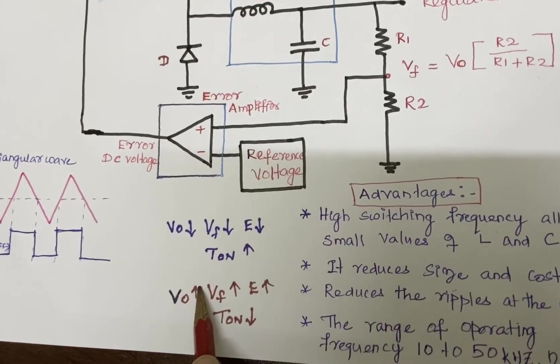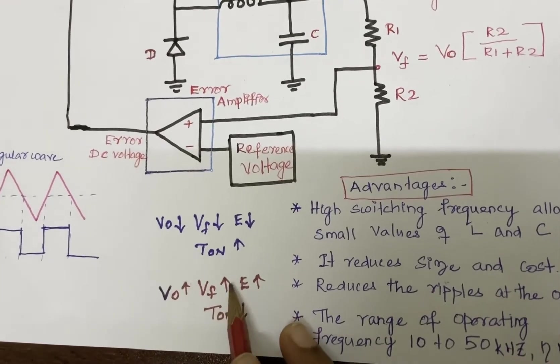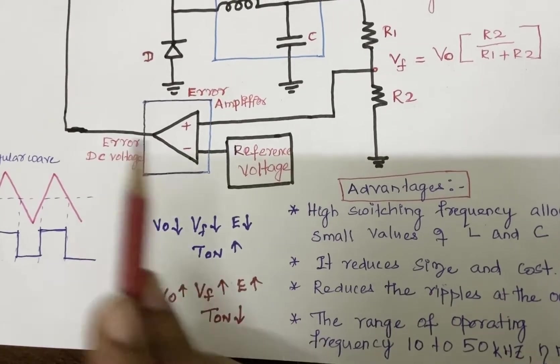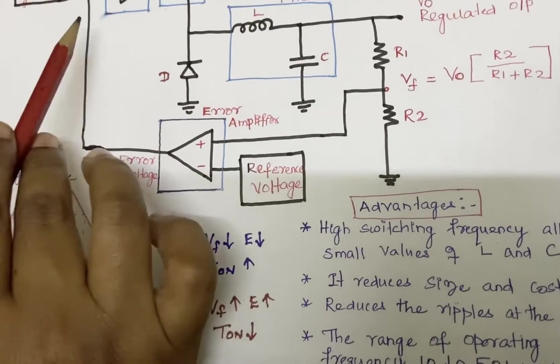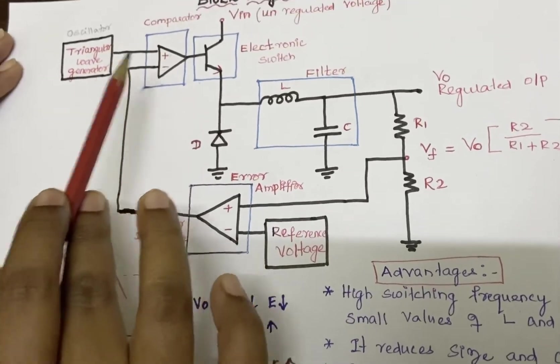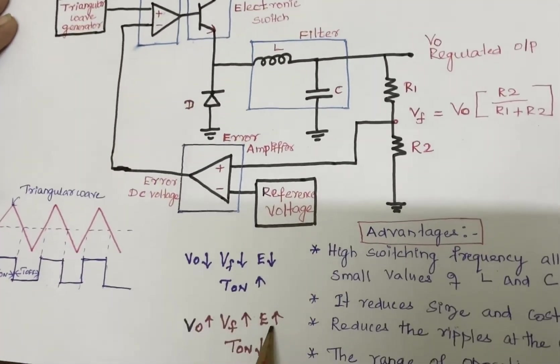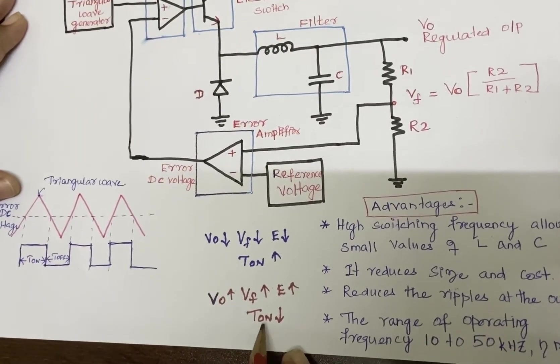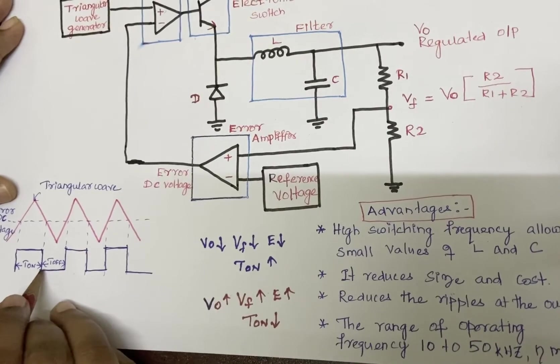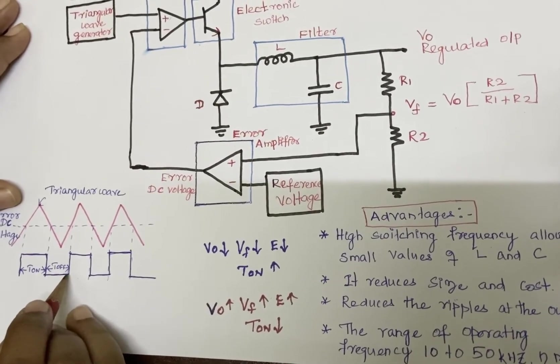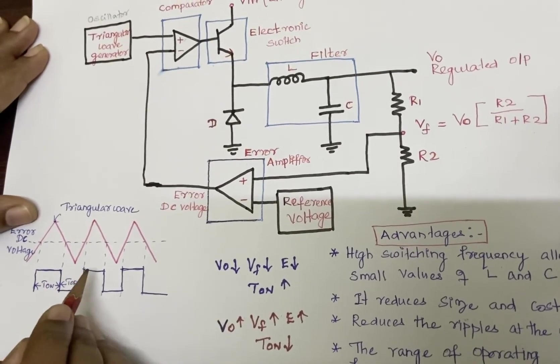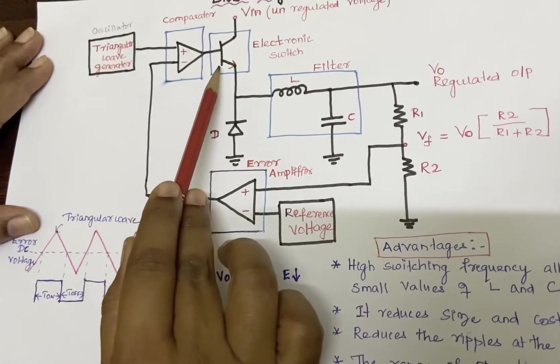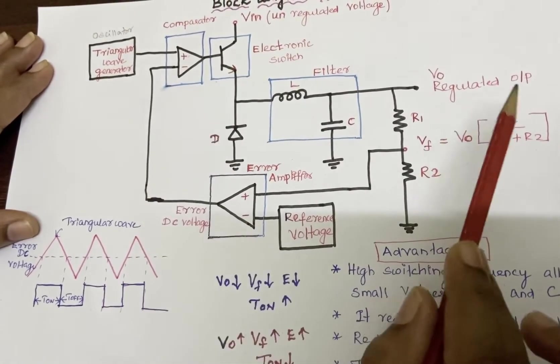This error voltage again is compared with the comparator. So the error voltage increases, and T-on decreases. So the T-on period will decrease. The total duty cycle of the transistor, T-on and T-off, controls the output voltage, thereby regulating the DC output voltage.